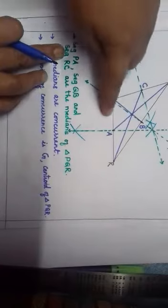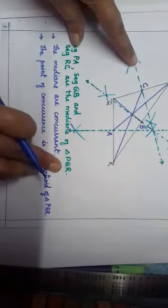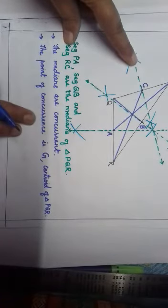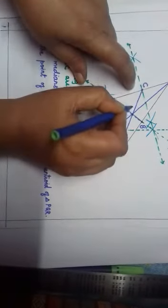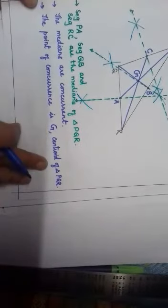So the three medians are PA, QB, and RC. In this way we have completed the figure. Segment PA, segment QB, and segment RC are the medians of triangle PQR. The medians are concurrent. The point of concurrence is point G, and we call G the centroid. The question asks to show the point of concurrence — so the point of concurrence is G, that is the centroid of triangle PQR.